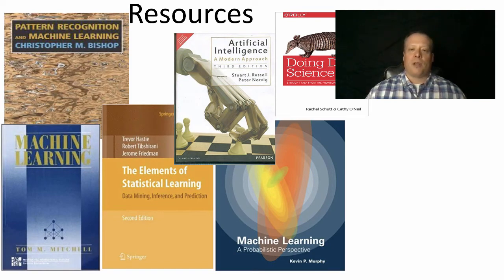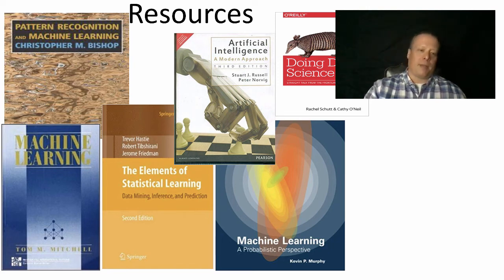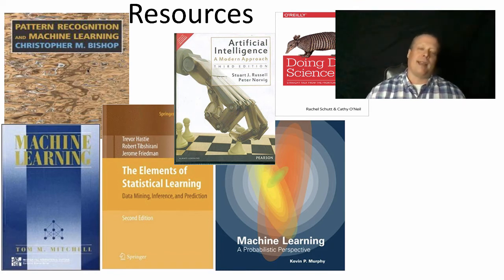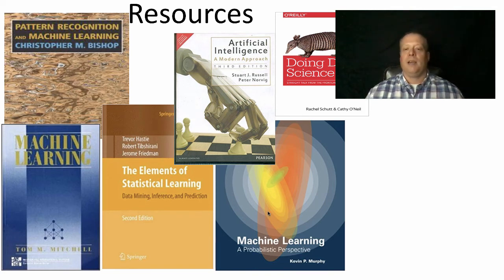Finally, to wrap up, I want to mention some resources. There are a lot of materials out there — here are a few books I found very useful. The machine learning book in the bottom left — the blue one by Mitchell — is the book I basically learned a lot of my machine learning from; it's been around quite a while. The Pattern Recognition and Machine Learning book came out shortly after I took my class in that space. Elements of Statistical Learning became popular in the early 2000s.